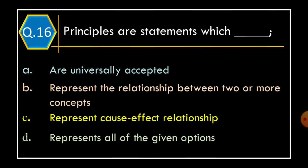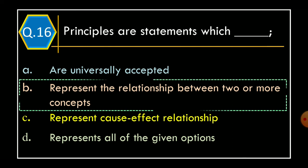Question 16: Principles are statements which — Option A: Are universally accepted; Option B: Represents the relationship between two or more concepts; Option C: Represents Cause-Effect Relationship; Option D: Represents all of the given options. The correct option is Option B: Represents the relationship between two or more concepts.